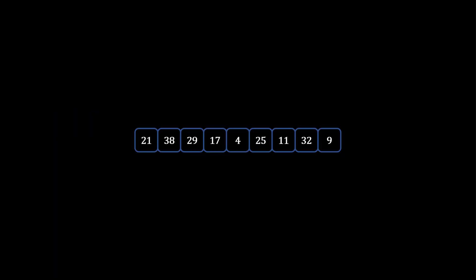Let's say you have this type of array. We'll first go over how Insertion Sort works. You start with the first element, which is 21, and the elements which are grayed out on the left-hand side of the yellow arrow form your sorted array. Anything at the yellow arrow or on the right-hand side is the unsorted array.